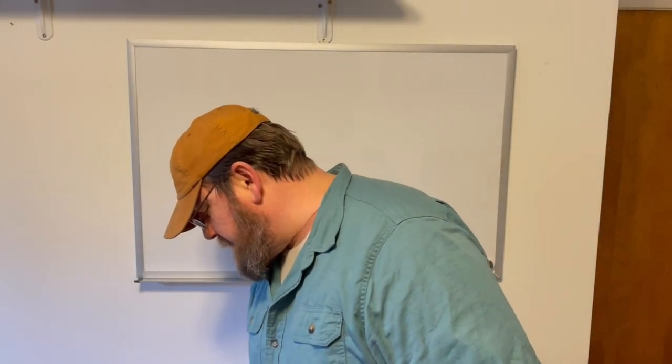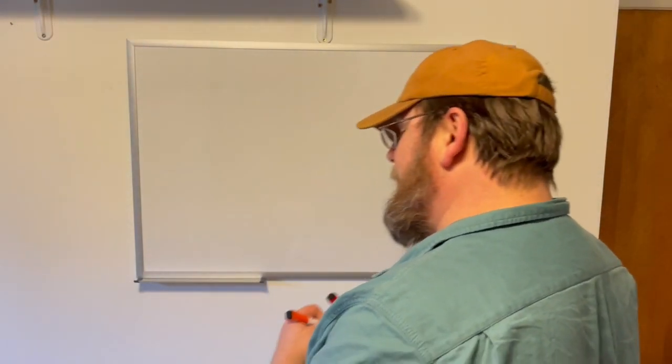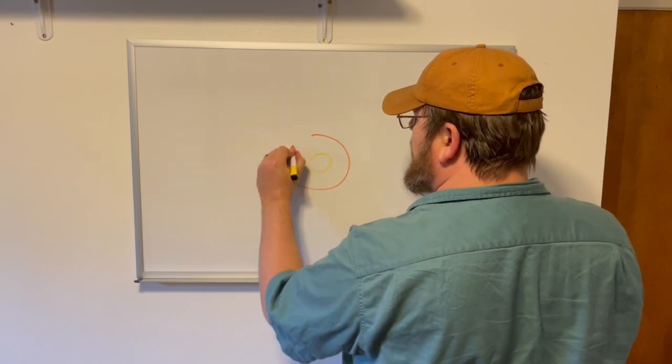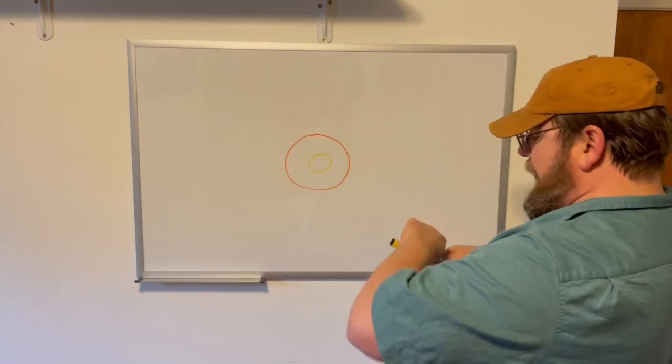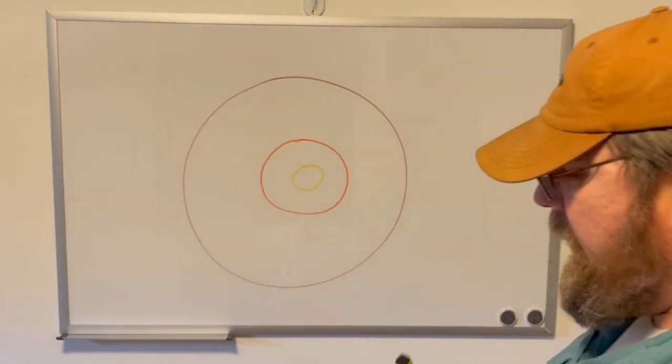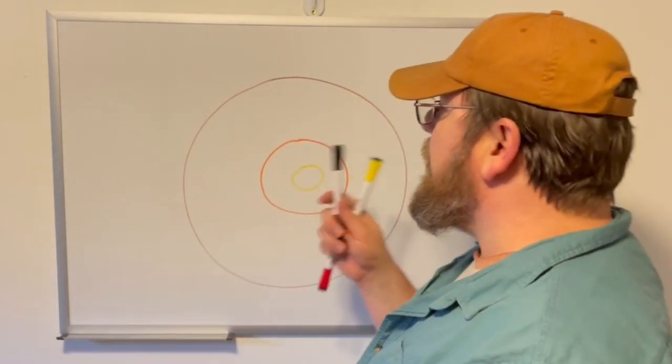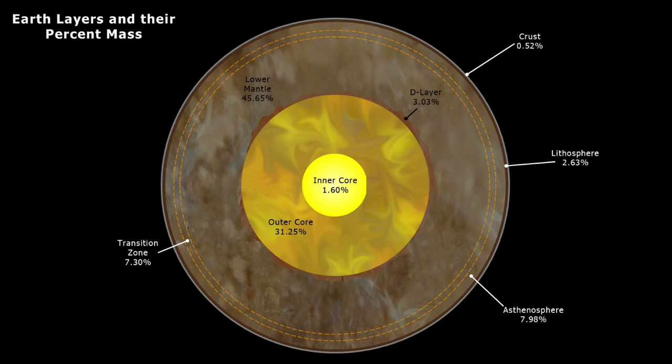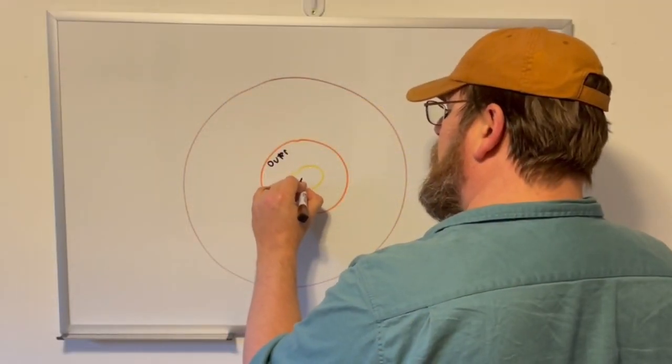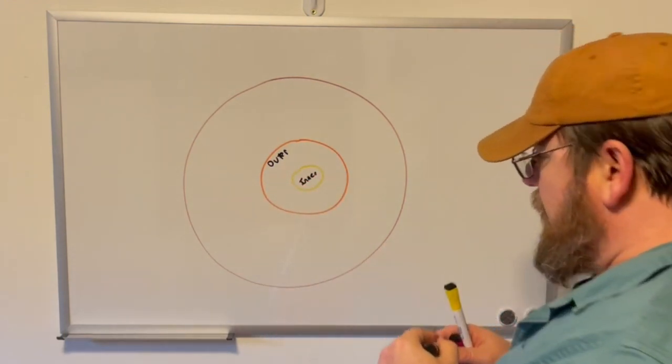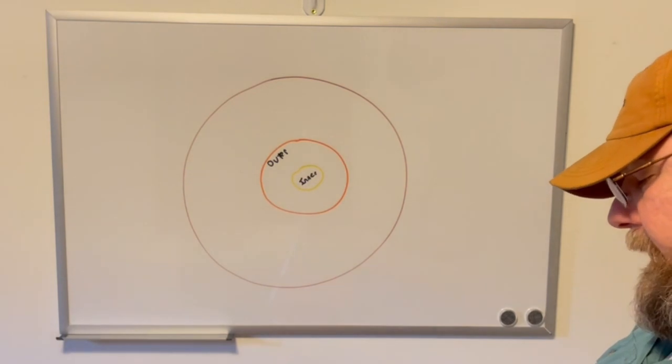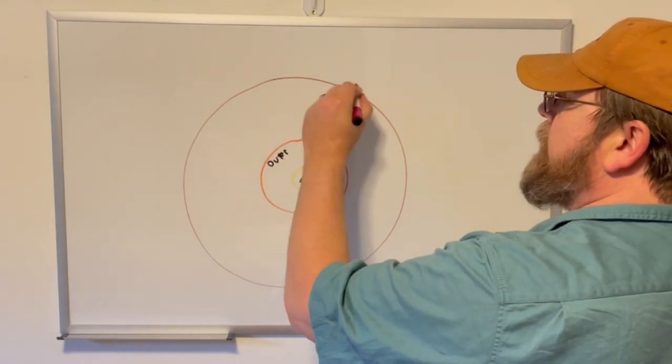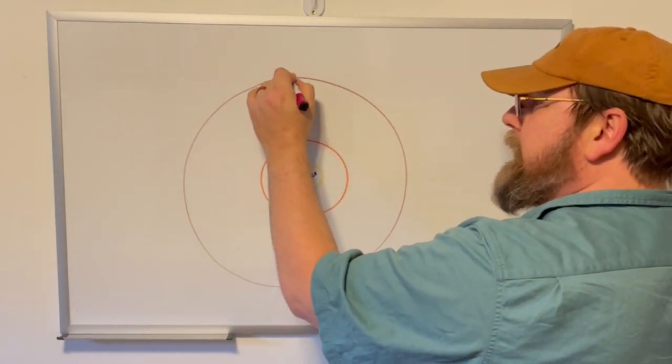Before I get into magma chambers again, I want to address a question about the core of the earth. We have our basic structure - the lithosphere, the mantle, and the core. Our inner core is solid, and our outer core is liquid.